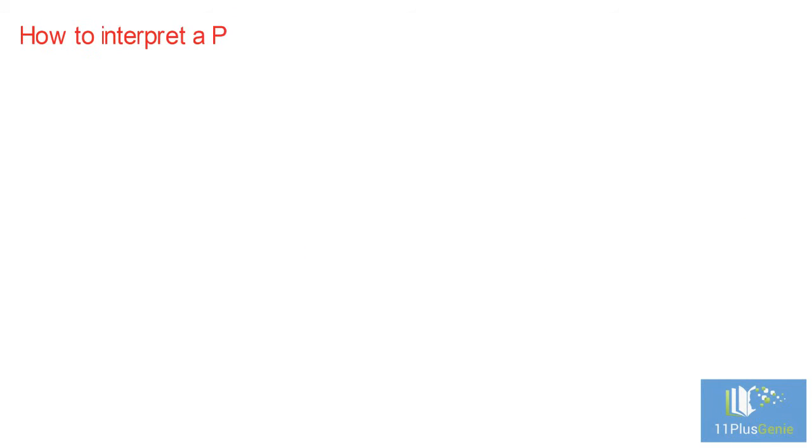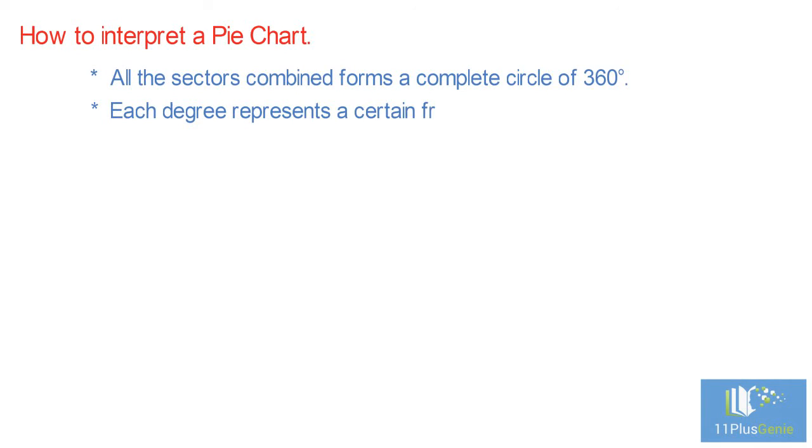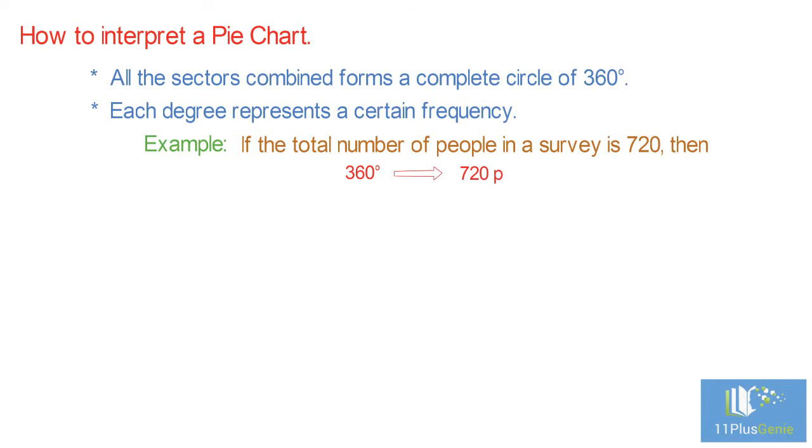How to interpret a pie chart. When all the sectors are combined, it forms a complete circle of 360 degrees. Each degree represents a certain frequency. If the total number of people in a survey is 720, then 360 degrees represents 720 people. One degree represents two people.